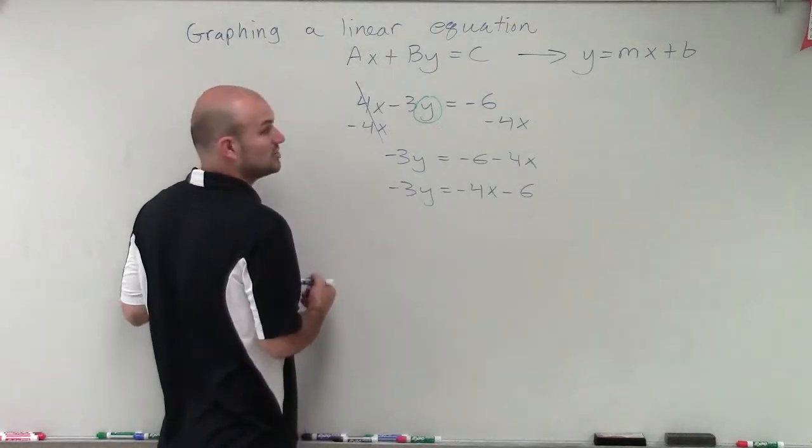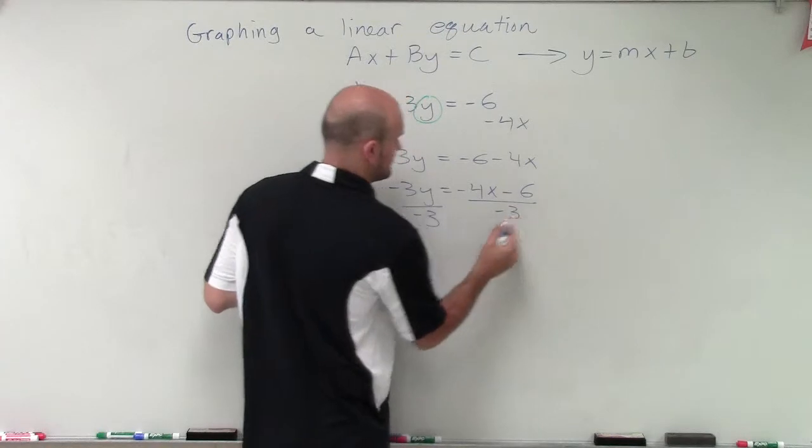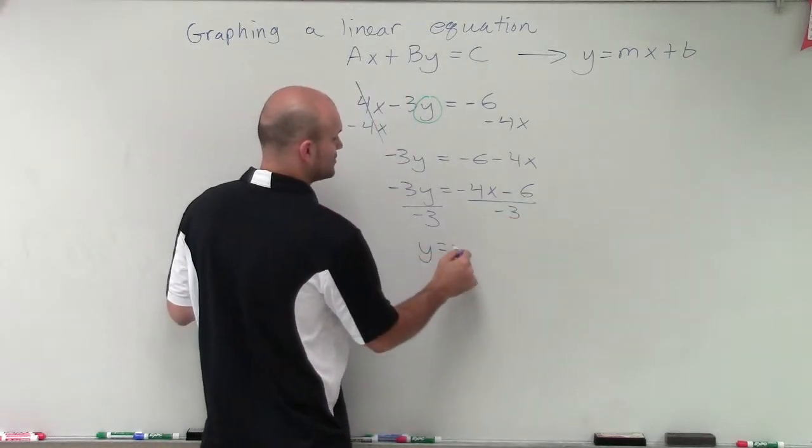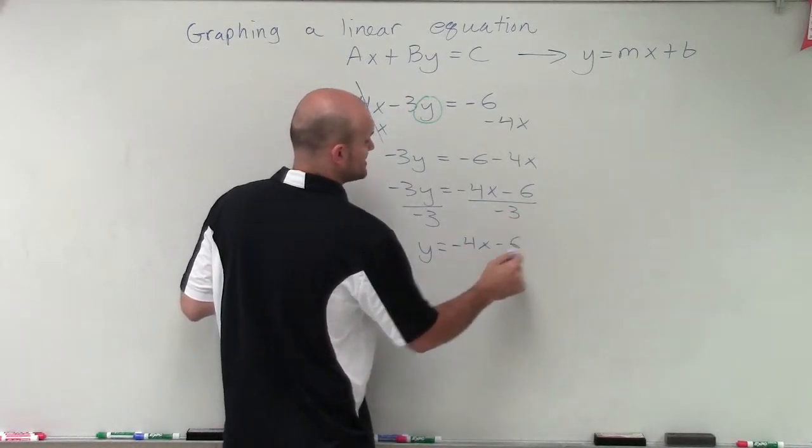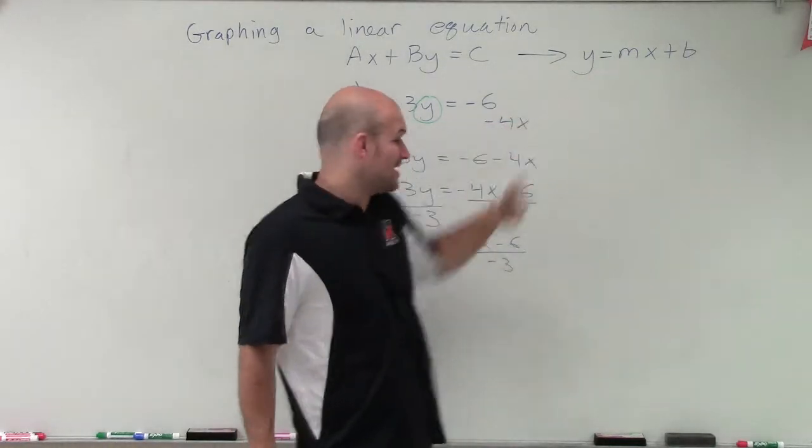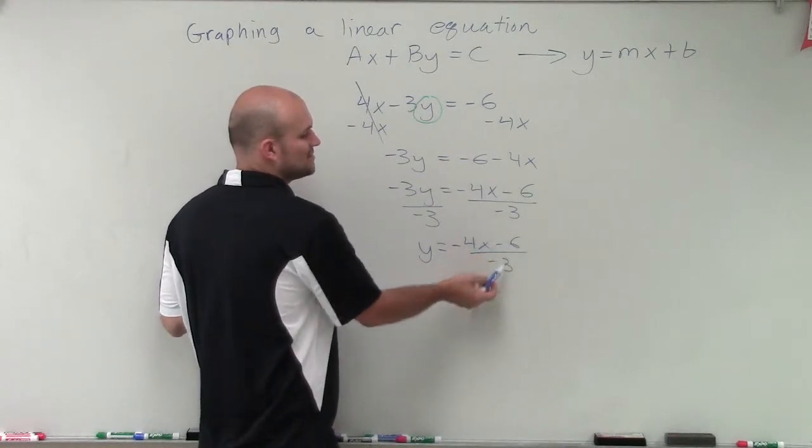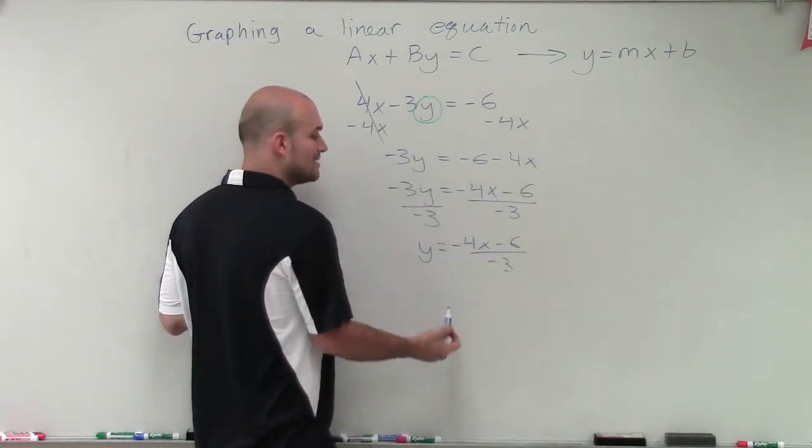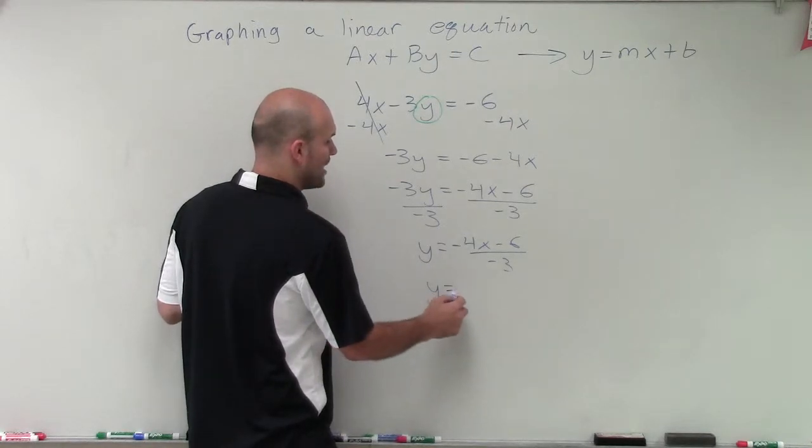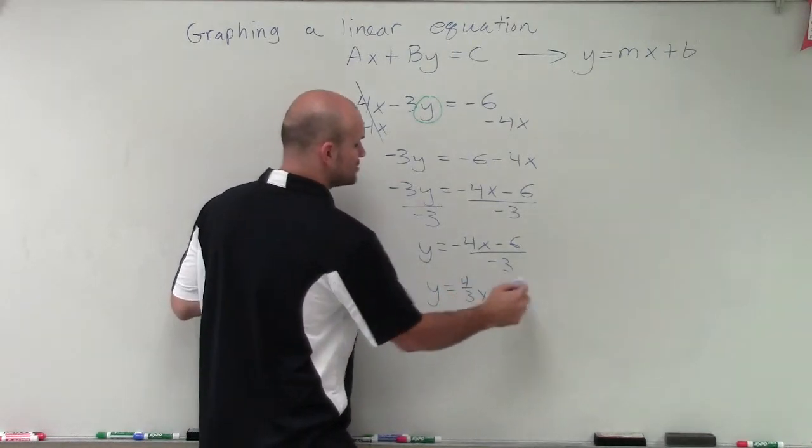Then I need to undo multiplication by a negative 3. So I'm going to divide by negative 3 on both sides. So therefore, I have y equals a negative 4x minus 6 divided by negative 3. It still doesn't look exactly like this, though, right? So we have to make sure that when we're dividing both of these terms by negative 3, I can divide negative 3 into both of them separately. So therefore, y equals a 4 3rds x plus 2.